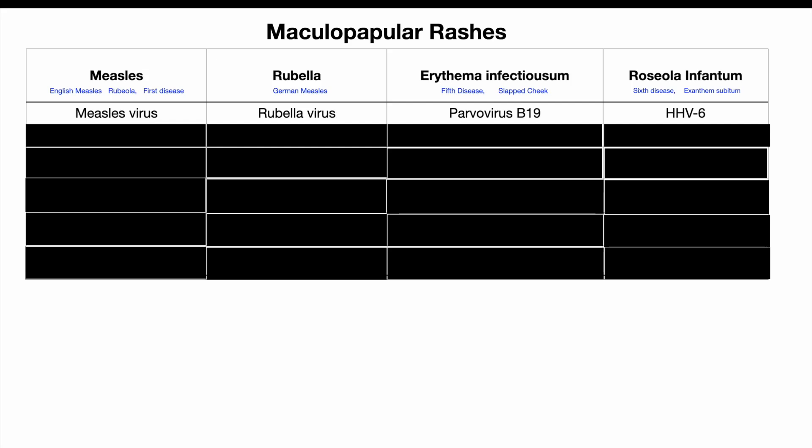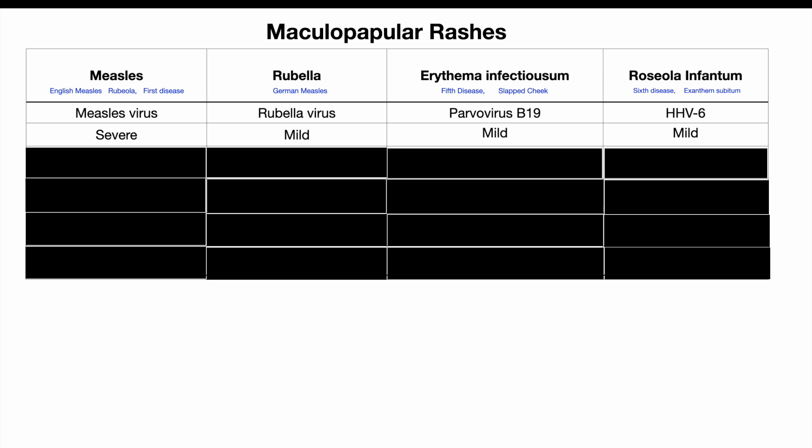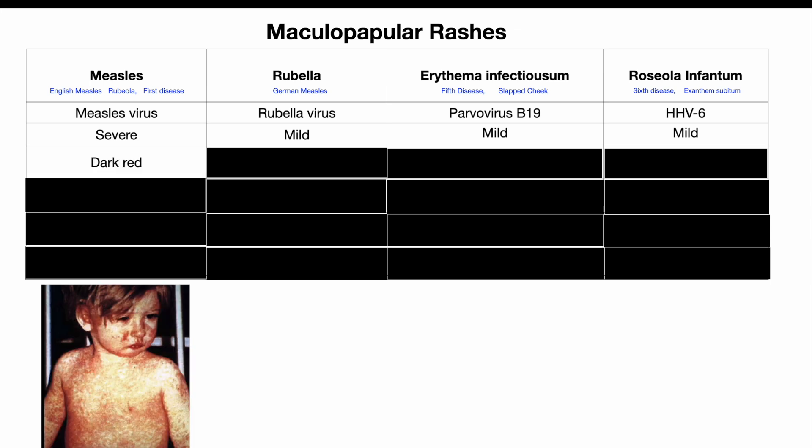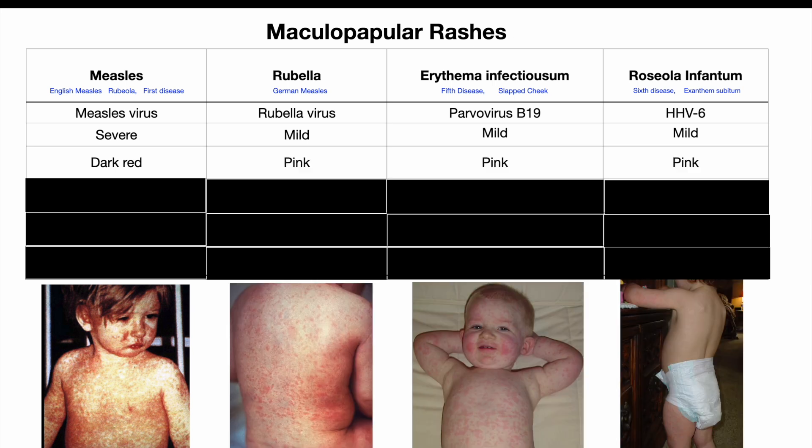The first clue in helping us distinguish between these viral exanthems is the severity of the disease. The child will be very irritable and poorly with measles, whereas the remaining three infections are relatively milder. Next, we need to consider the colour of the rash, which is quite dark red with measles, but a bit lighter — rather more pink — in the remaining three diseases.